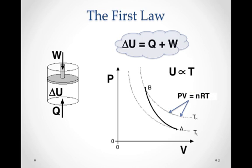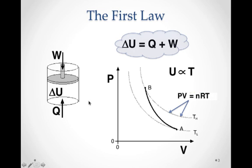The first law of thermodynamics is really a statement of conservation of energy in a thermal system. For our example, we have a gas trapped in a cylinder with a piston pressing down. The first law states that the change in internal energy of the gas is equal to the amount of heat added to the gas, plus the amount of work done on the gas by compressing it. Those two factors — heat added and work done by compression — will cause a change in internal energy.